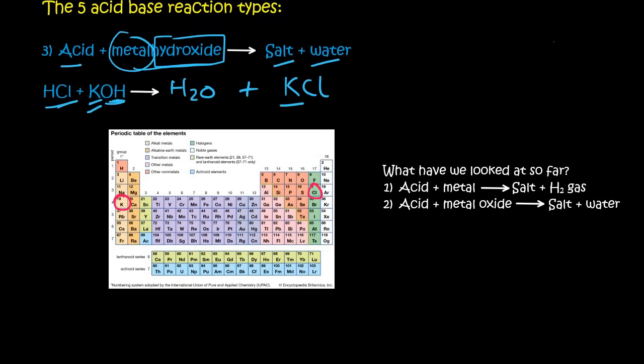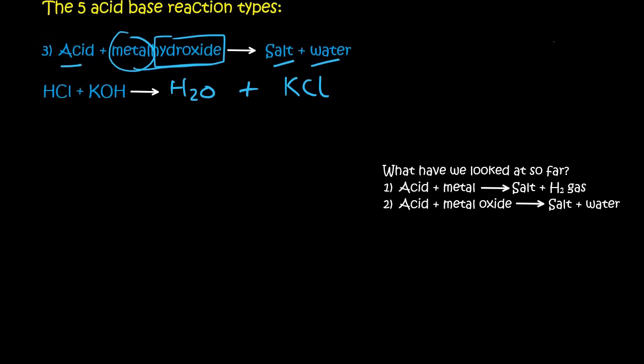And chloride has a valency of minus one. And so they are balanced already. Now we should just make sure that the reaction is balanced. And if you have a look, you'll see that there is the same amount of everything on each side. And so that is balanced.